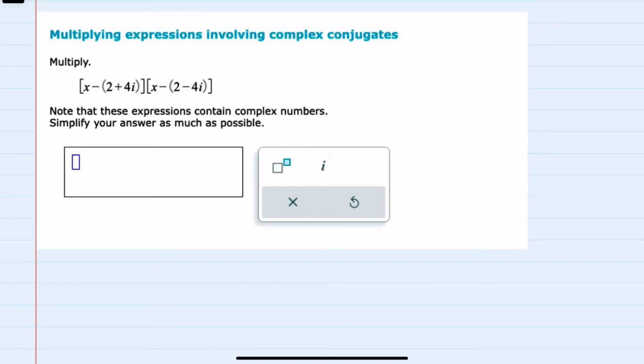In this video, I'll be helping you with the Alex problem type called multiplying expressions involving complex conjugates. We're multiplying here, and for each one of these, we have x minus a complex number. So we have our variables and our complex numbers.